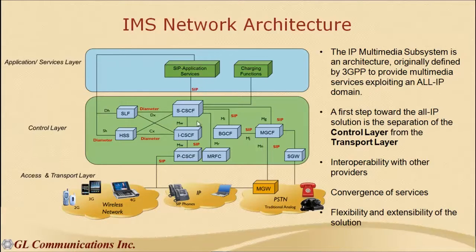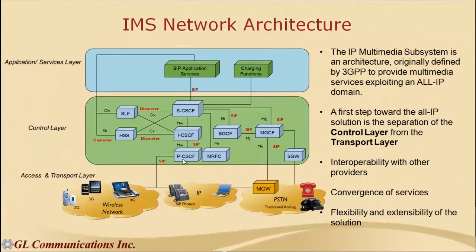Important network elements in IMS are called CSCFs — Call Session Control Functions — which are essentially SIP servers. There are three types. The first is the Proxy-CSCF (P-CSCF), which is the first point of contact for user equipment. All signaling passes through P-CSCF. It establishes IPsec or TLS security associations with UE. It can compress and decompress SIP messages to save bandwidth. It also decides the quality of service required for bearers once a call is established and generates charging records.